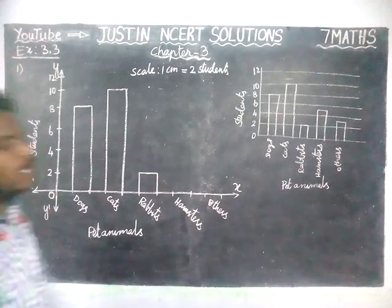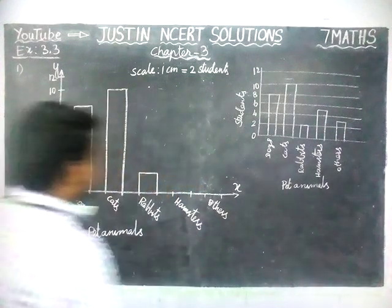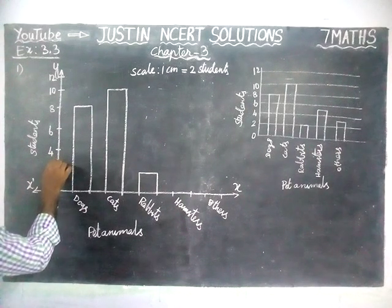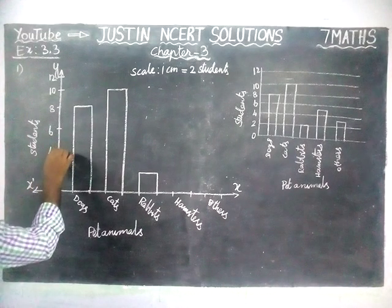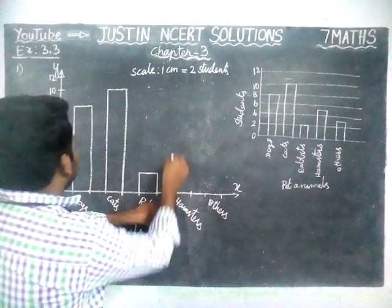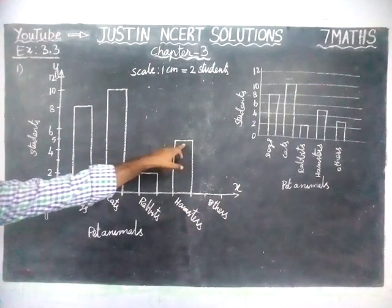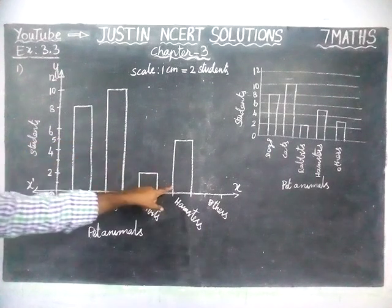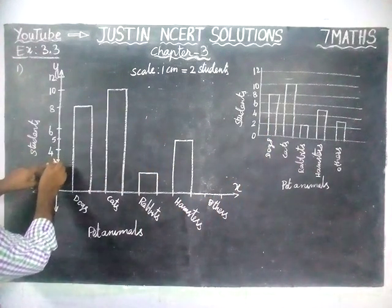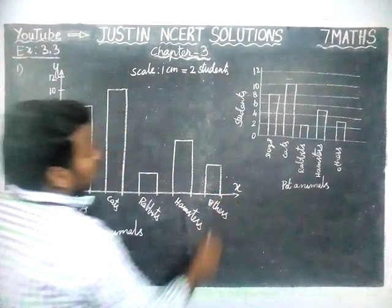Then hamsters — 5 students are there. The bar graph for hamsters is between 4 and 6, so that is 5. Here, between 0 and 2 the midpoint is 1, between 2 and 4 the midpoint is 3, and between 4 and 6 the midpoint line is 5. So we draw the hamsters bar at 5. For others, it falls between 2 and 4, so 3 students have other pet animals.